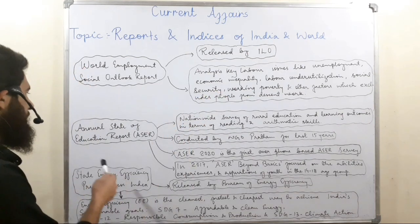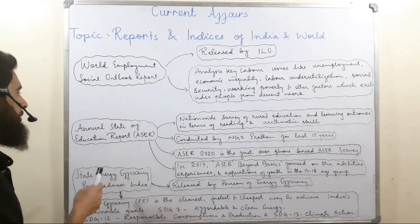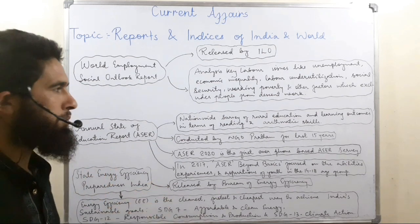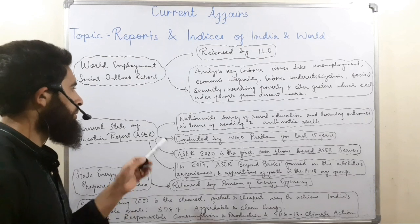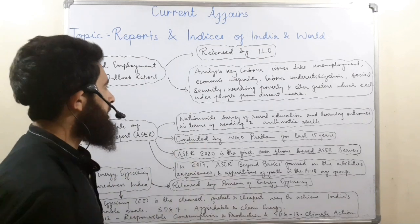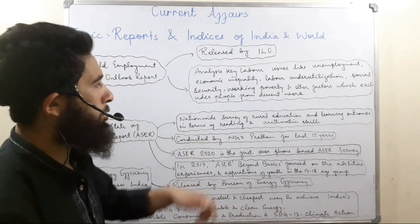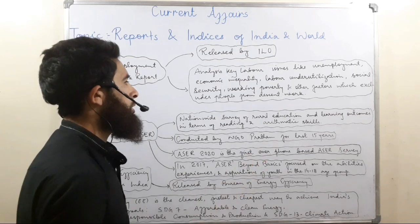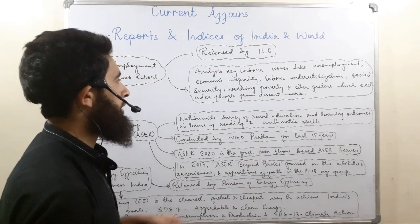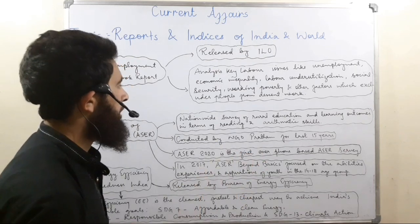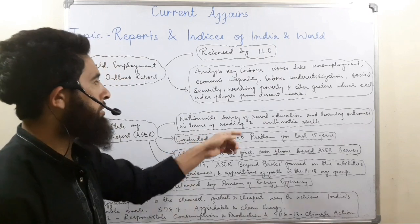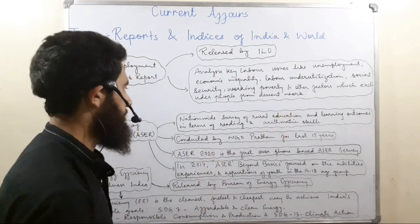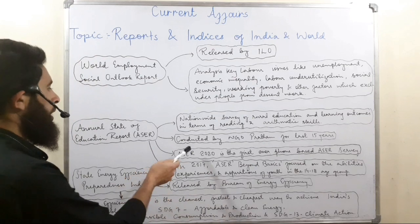The second is the Annual Status of Education Report, ASER. It is a nationwide survey of rural education, focusing on learning outcomes in terms of reading and arithmetic skills.